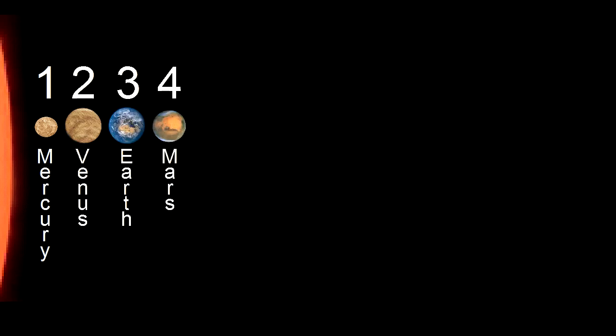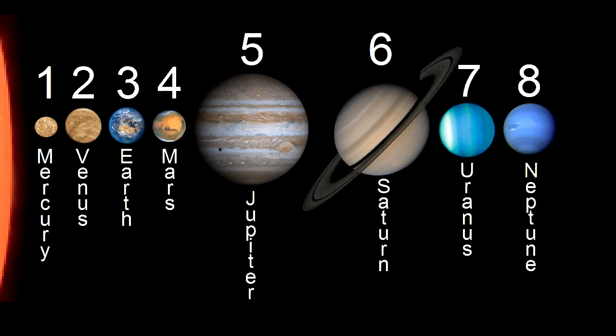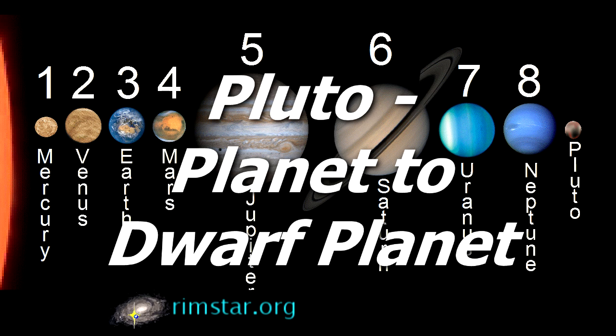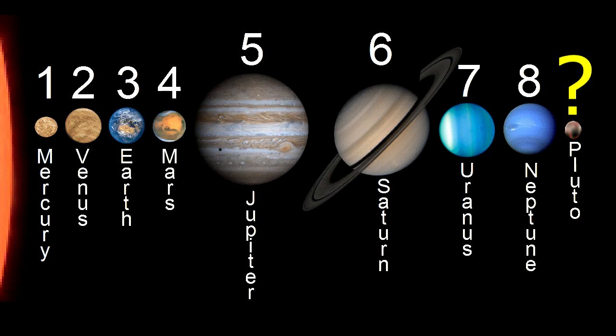You may have noticed that we now have only 8 planets in our solar system. Most of us grew up with 9. Pluto was the 9th, but it's no longer a planet. I'll explain why not, and also, if Pluto is no longer a planet, just what is it?